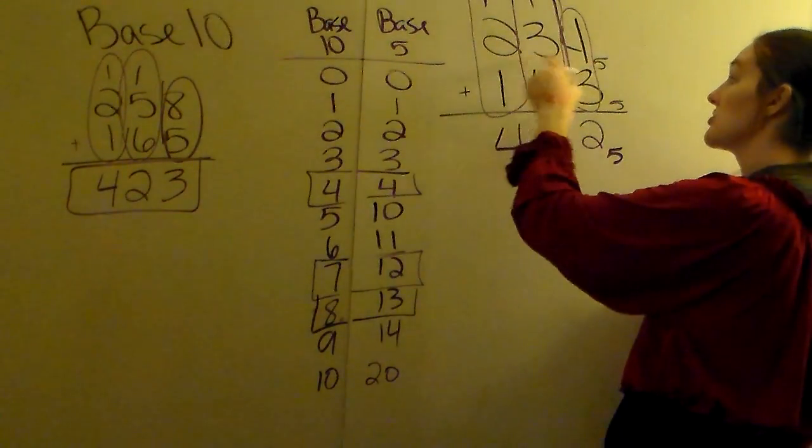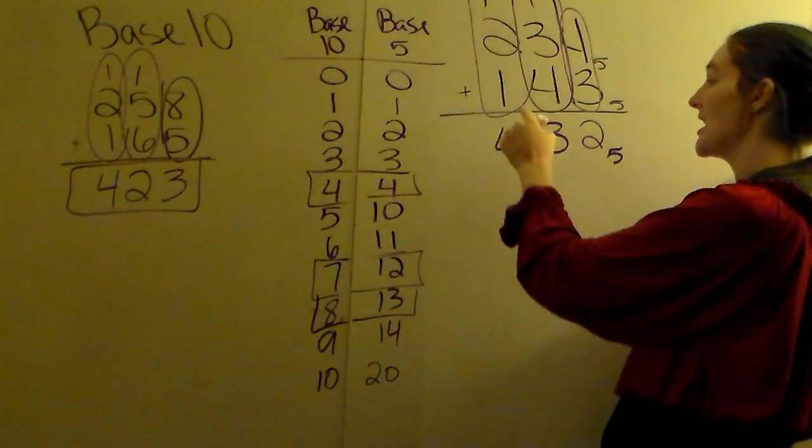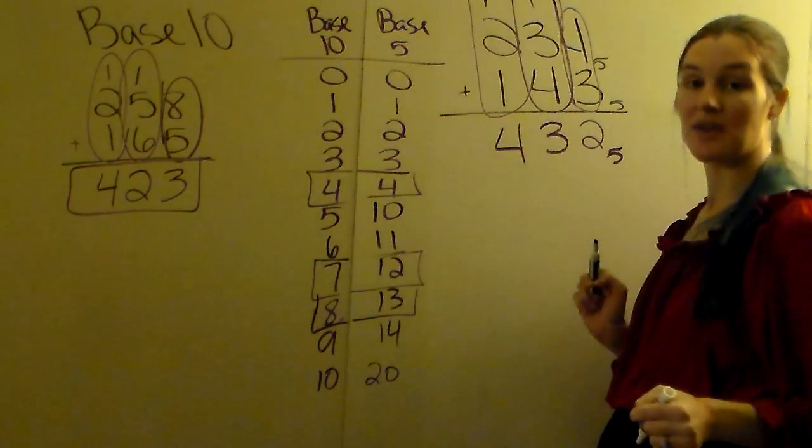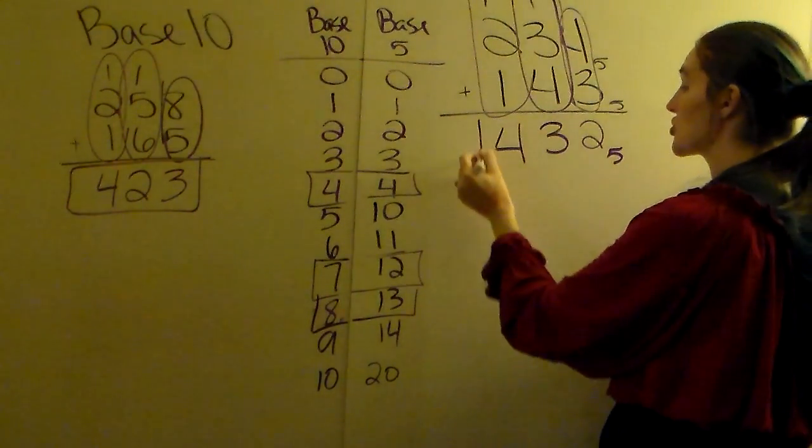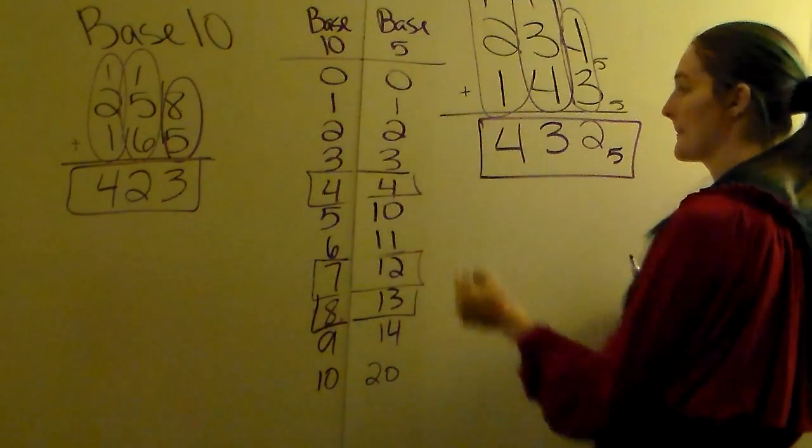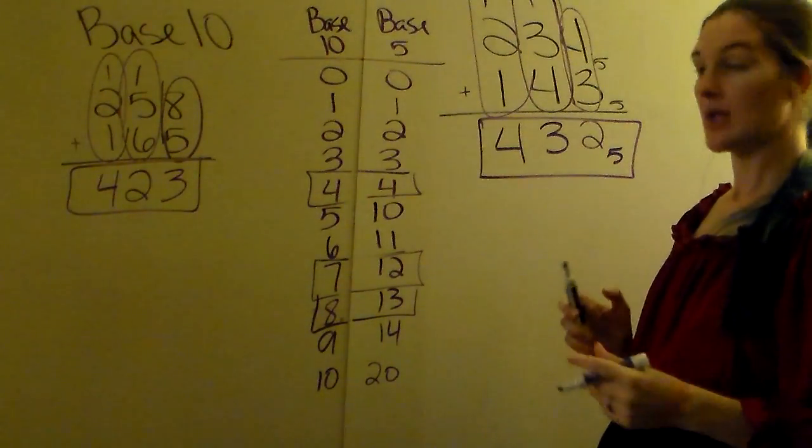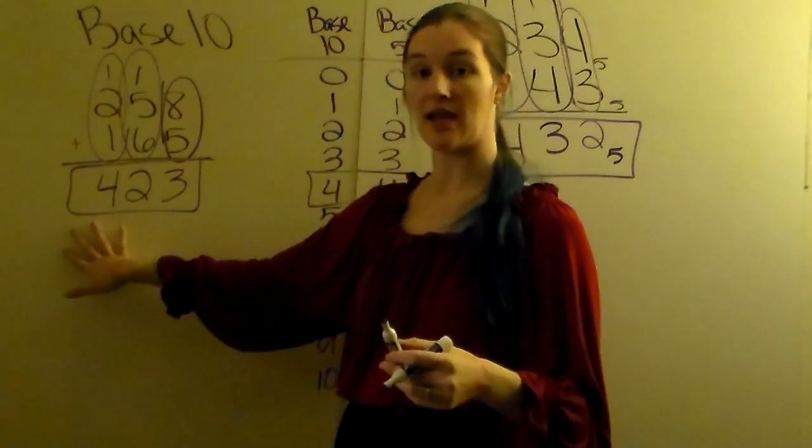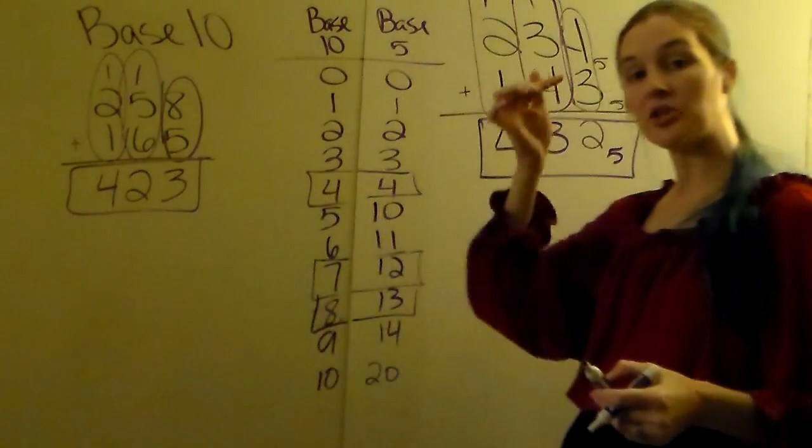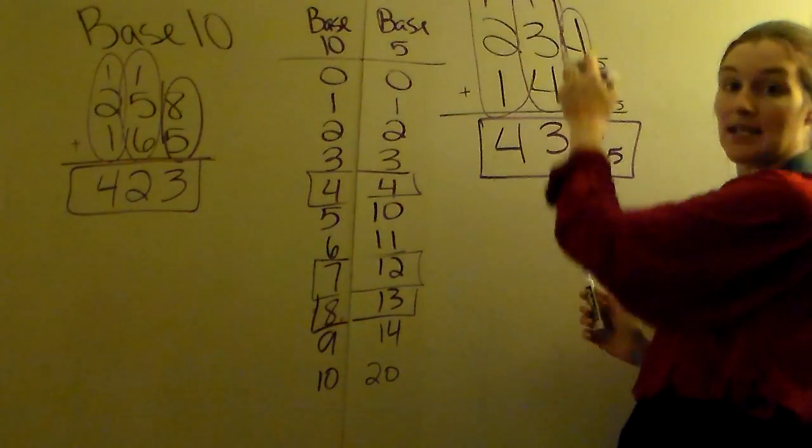So 234 base 5 plus 143 base 5 is 432 base 5. So you're going to treat it similar to how you did base 10. In your head, do the math in base 10. 4 plus 3 was 7 in base 10.